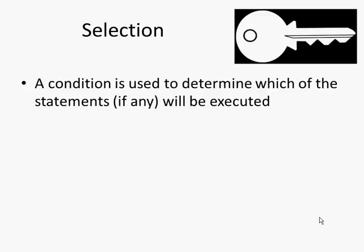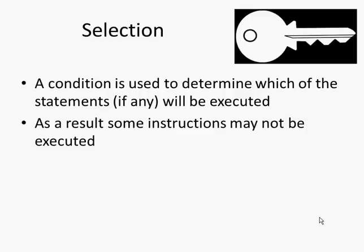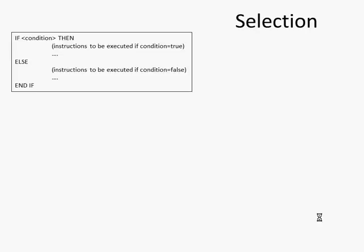To summarize, the key things we need to know about selection for an exam are: selection is where a condition is used to determine which of the statements, if any, will be executed. And as a result, some instructions may not be executed. If we imagine a basic if statement, if condition is true, then instructions to be executed if condition is true. Otherwise, instructions to be executed if condition is false. So the program flow would follow a different path.